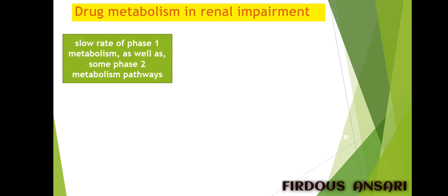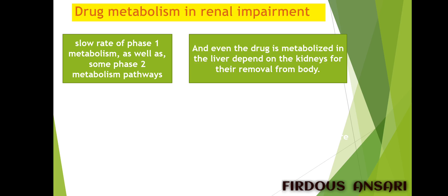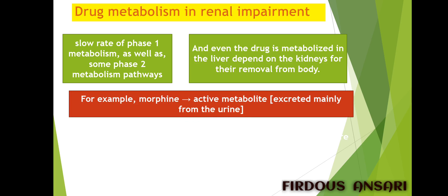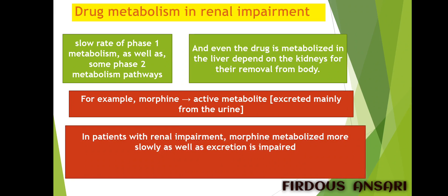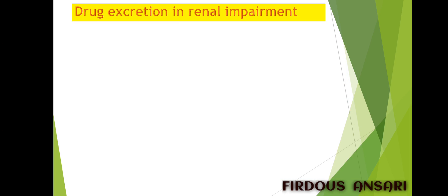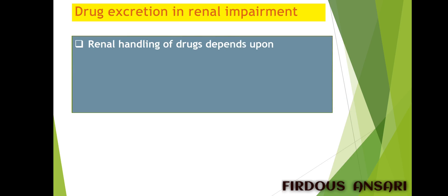For drug metabolism in renal impairment, a slow rate of phase one metabolism as well as some phase two metabolism pathways are seen. Even drugs metabolized in the liver depend on the kidneys for their removal from the body. For example, morphine — an active metabolite — is mainly excreted via urine. In patients with renal impairment, morphine is metabolized more slowly and its excretion is impaired, causing increased active metabolite to be present inside the body, leading to increased drug toxicity.